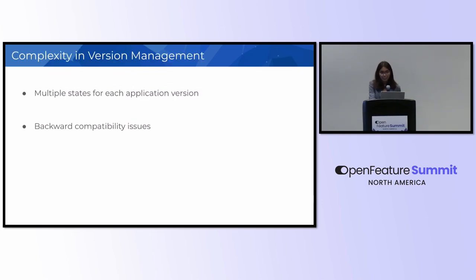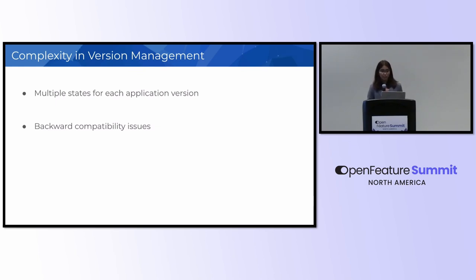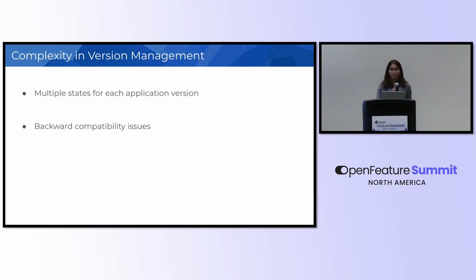Starting with the first one — complexity in version management. There are many active flags at the same time, so it becomes difficult to name the version in a traditional versioning system. The second complexity is backward compatibility issues. Developer teams need to ensure that the code is visible to server-side clients so they can access it, but due to feature flags, this is not always possible.